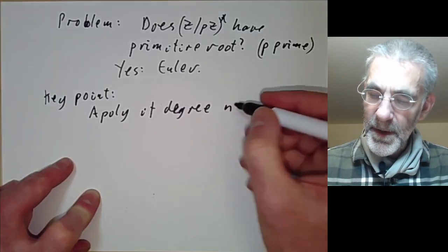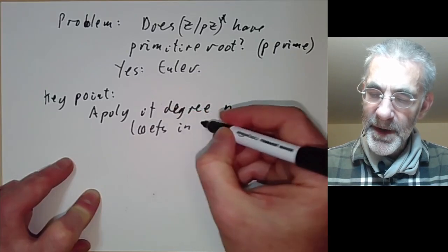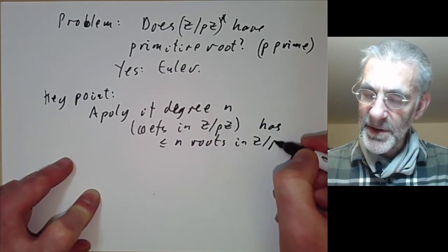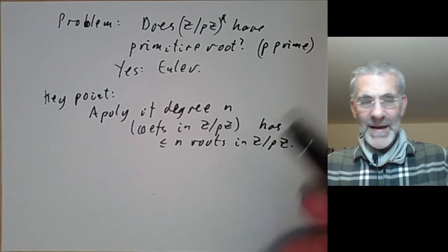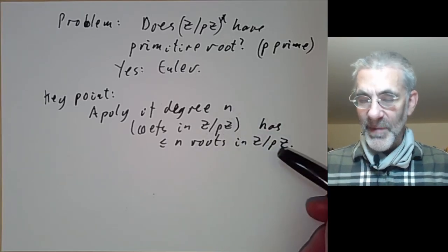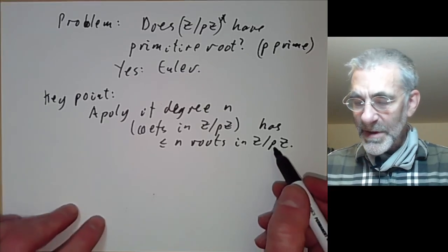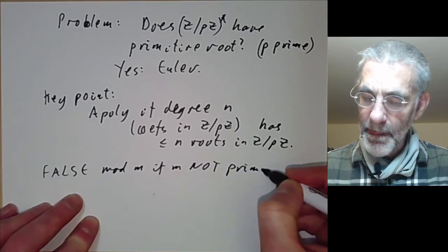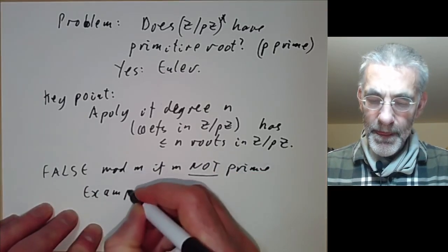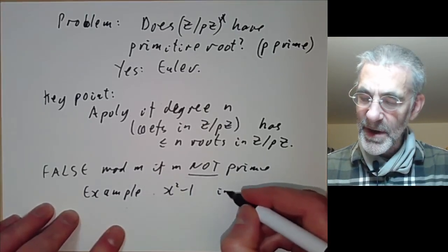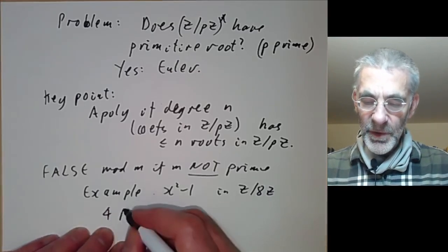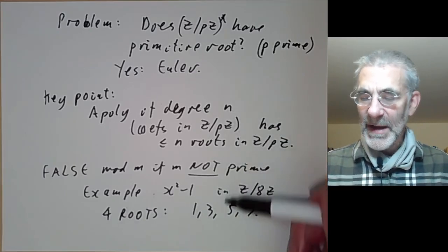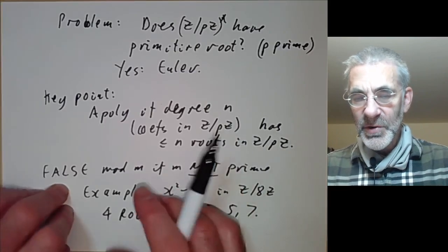The key point needed is: a polynomial of degree n with coefficients in Z/pZ has at most n roots in Z/pZ. You might think this is obvious, but it is actually false mod m when m is not prime. For example, the degree-2 polynomial x² − 1 has four roots in Z/8Z — namely 1, 3, 5, 7. Euler discovered this is still true modulo a prime.